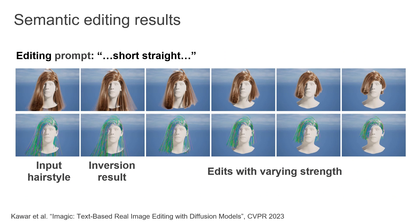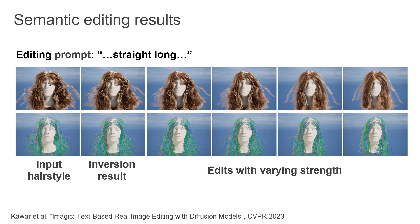We showcase the editing capabilities for predefined hairstyles using an off-the-shelf inversion method for the text-guided diffusion model. Given the input hair asset, we produce its latent hair map and invert it using a pre-trained diffusion model. As a result, we obtain a textual conditioning vector corresponding to this hair style. We can then interpolate between this vector and the embedding of a semantic query to conduct the editing. Our generative model can produce complex editing operations given only textual descriptions while preserving other input features like hair volume.